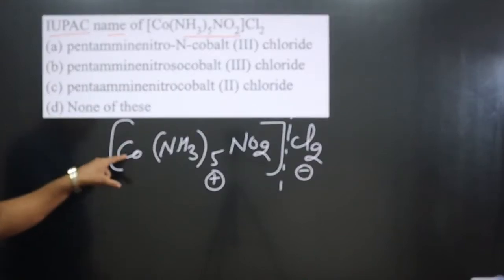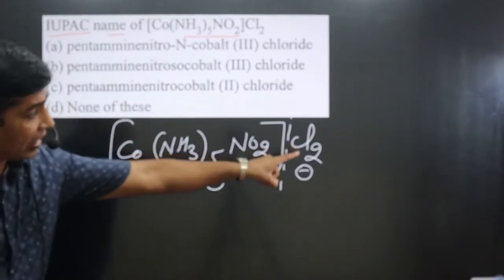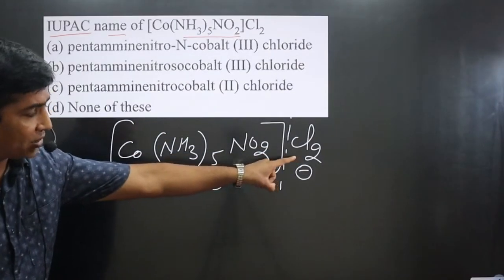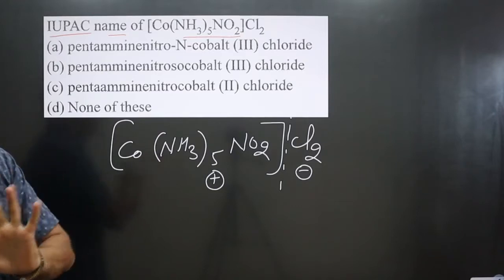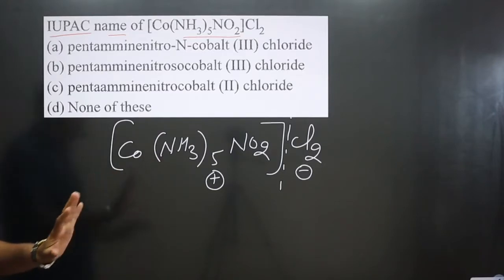If the central metal atom is present in the anionic part, then we have to use 'cobaltate'.